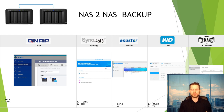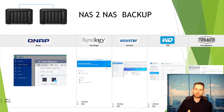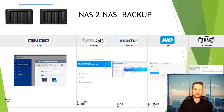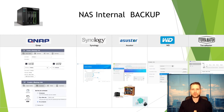Synology similarly lets you use their own backup software for Synology-to-Synology, or rsync for cross-platform. ASUSTOR, WD, and TerraMaster are more complicated but still support rsync for remote replication. On WD you go to Remote Backups in settings; on TerraMaster you go to Backup. Clearly the winners here are QNAP and Synology, both very similar when it comes to NAS-to-NAS backup.